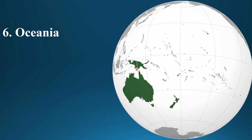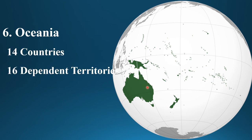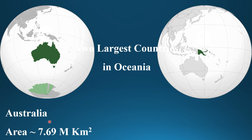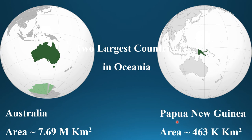Oceania is another continent in the world. It has 14 countries and 16 dependent territories. The total area of Oceania is 8.94 million square kilometers. The two largest countries in Oceania are Australia and Papua New Guinea. Australia has also claimed territories in Antarctica, and its total area is 7.69 million square kilometers. Papua New Guinea, the second largest country in Oceania, has an area of 463,000 square kilometers.